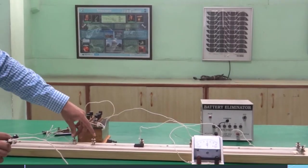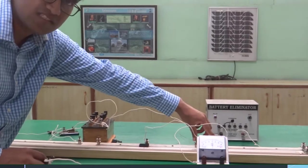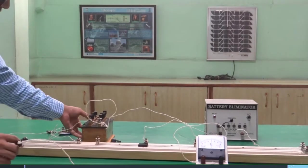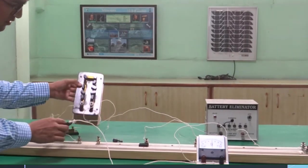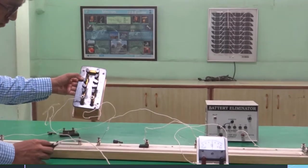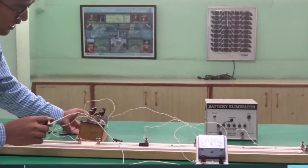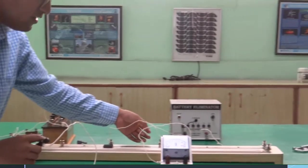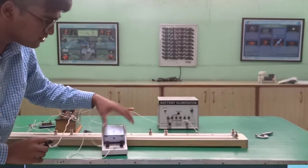These are the two slots for the unknown resistance. Here what we are doing is, in one of the gaps we have used a resistance box and in the second gap we have used a resistance wire. You can see over here.